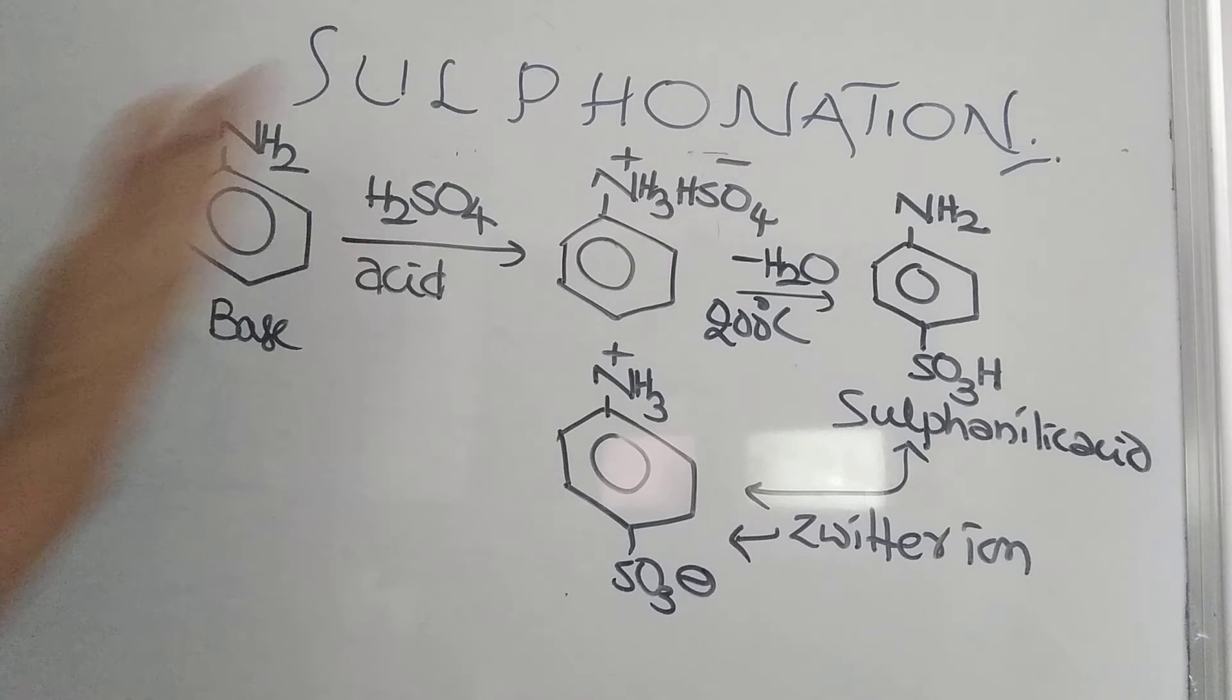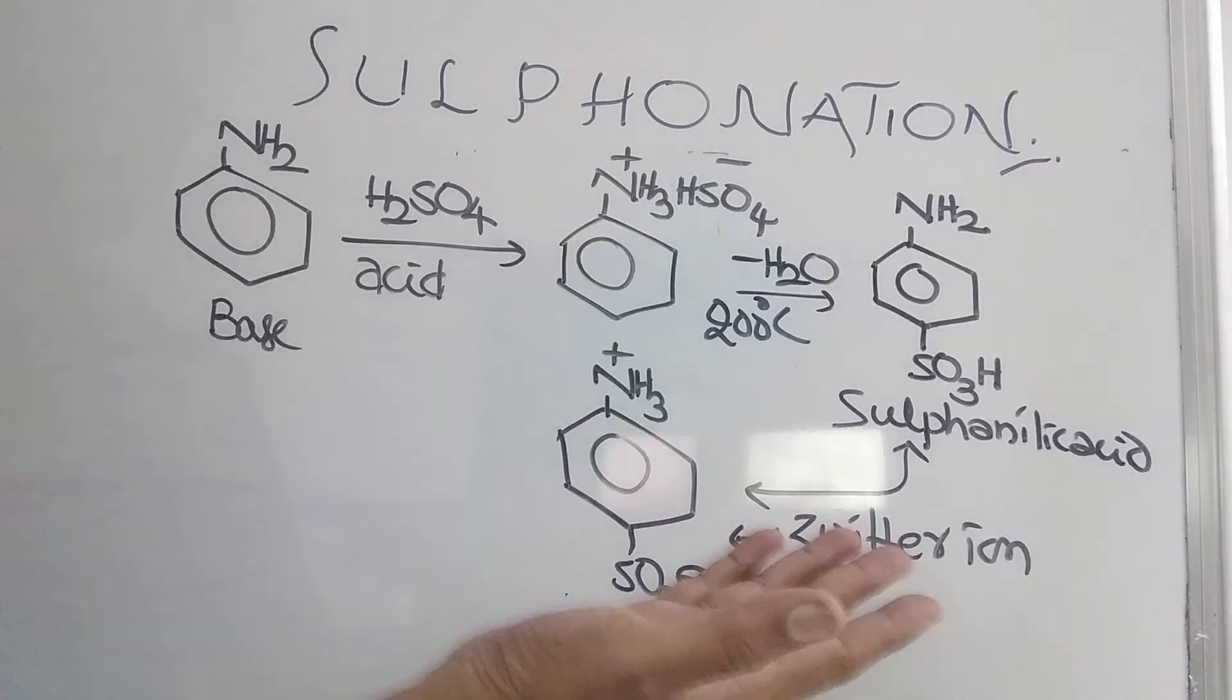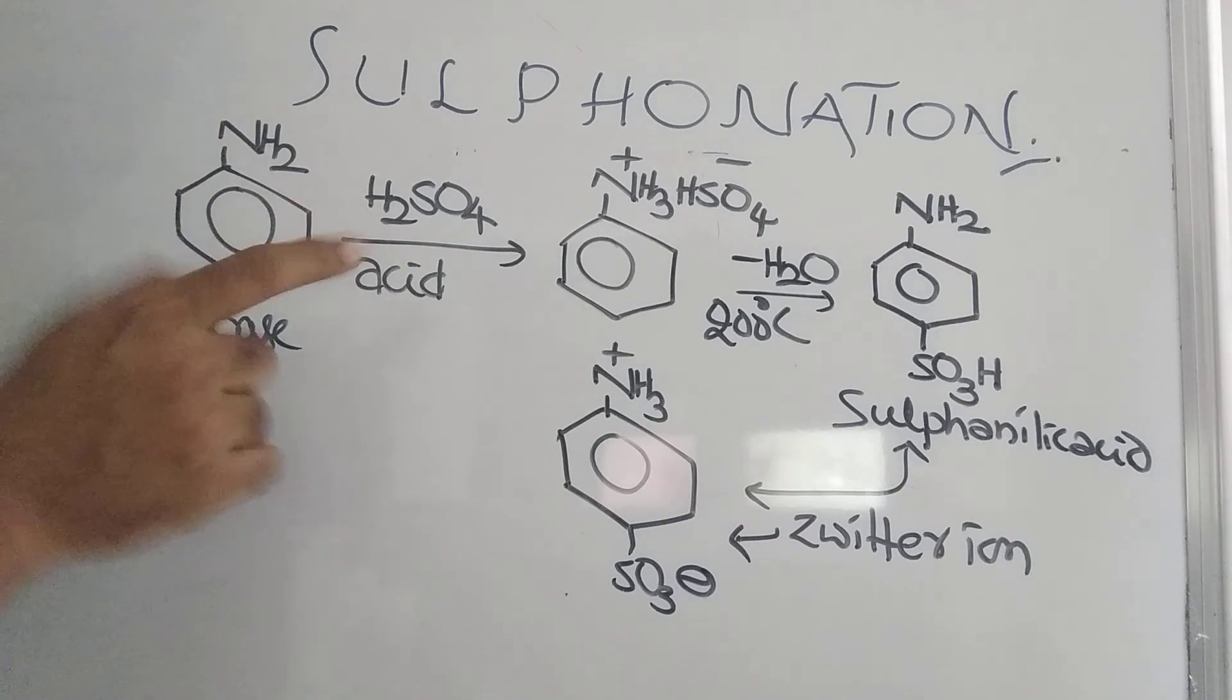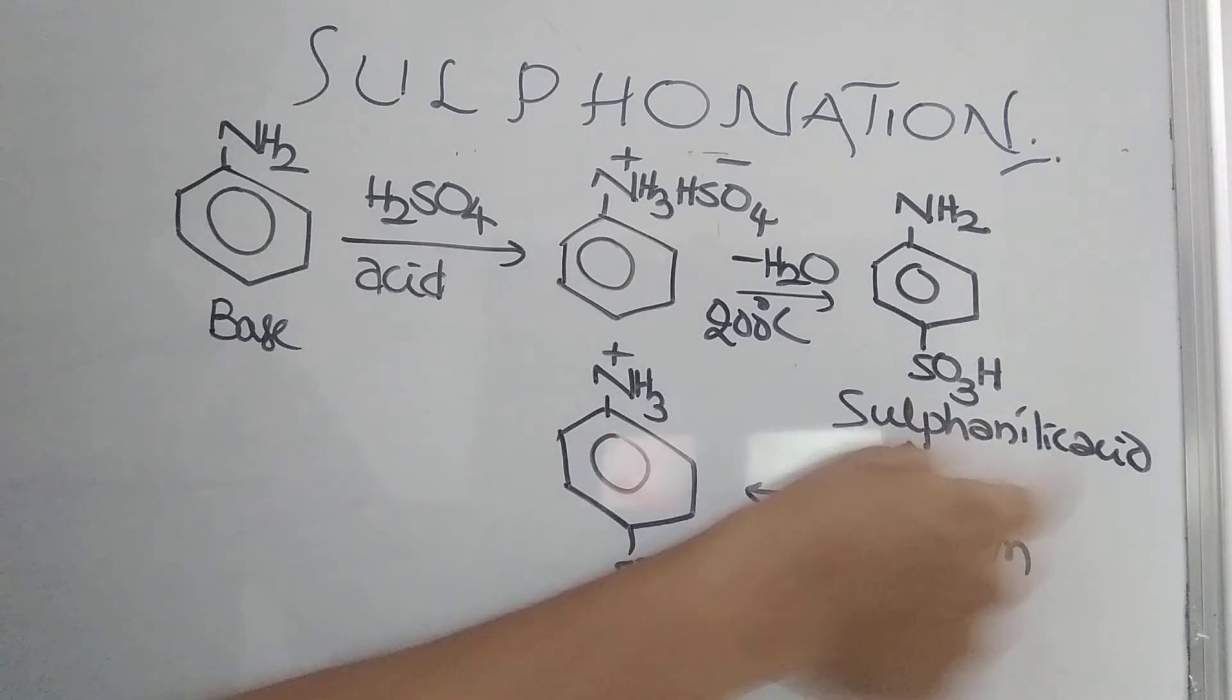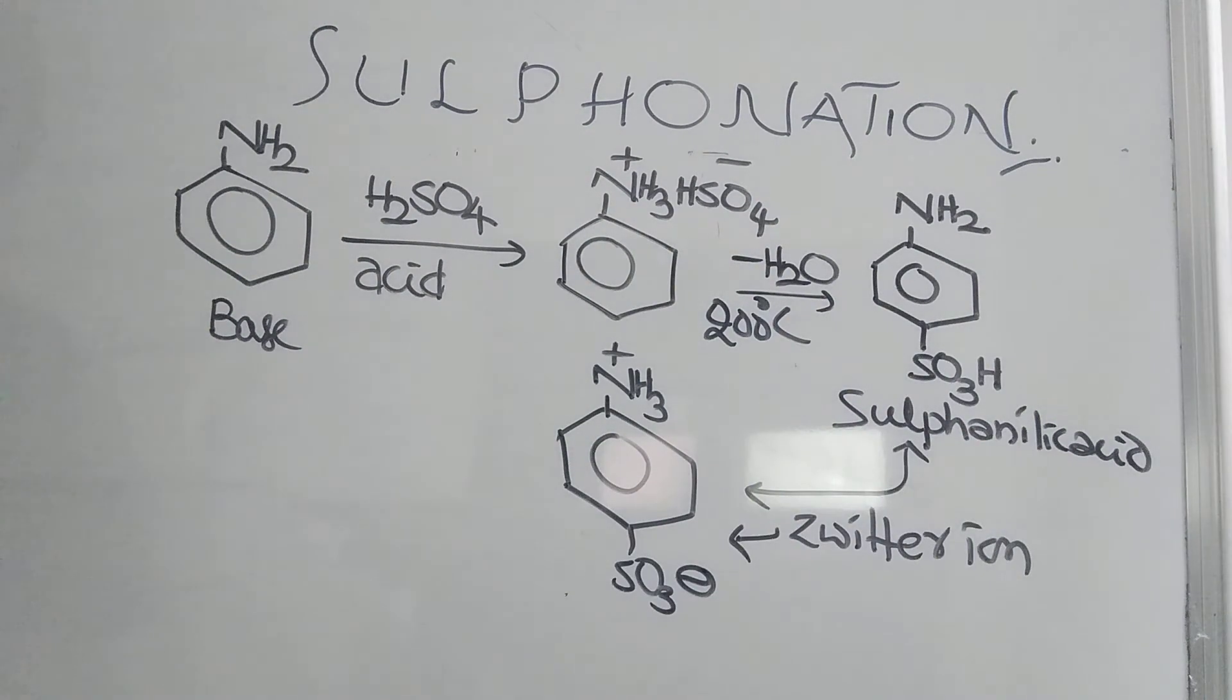NH2, it is a base. Reacts with H2SO4 to form NH3+ HSO4-. Losing water molecule, it will form NH2SO3H. The name change here, you can see. From H2SO4, I am taking OH. From here, I am taking H. SO3H. I am adding here. Zwitterion is found.